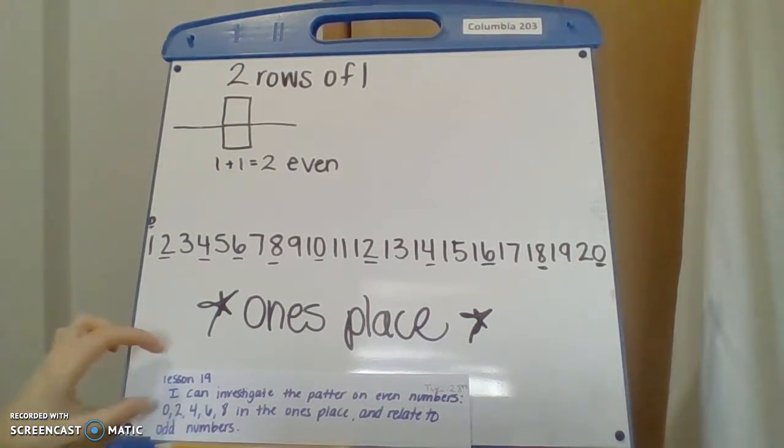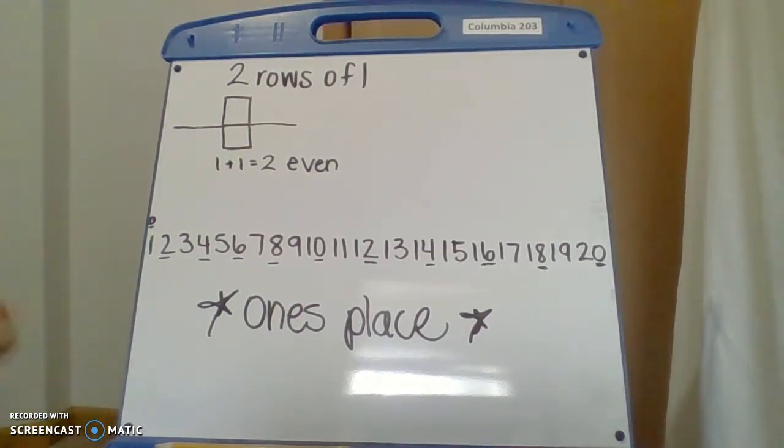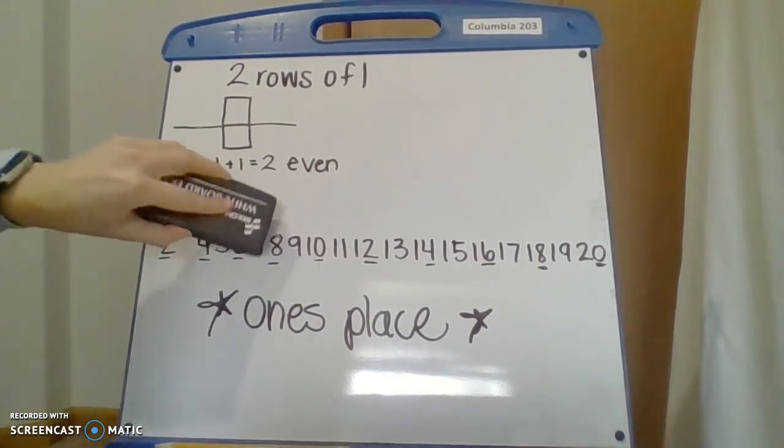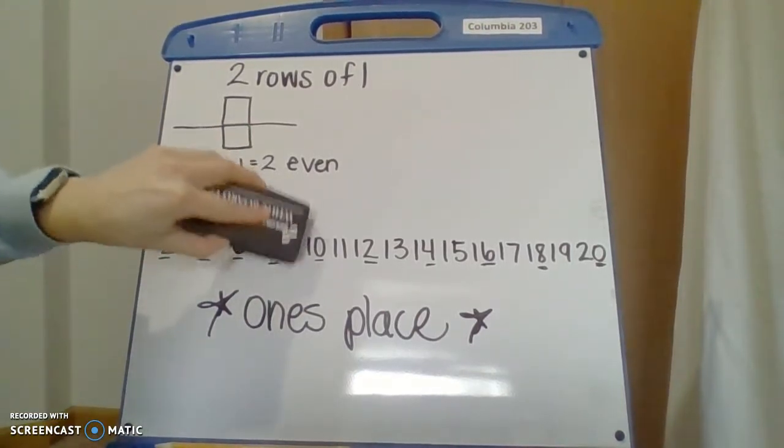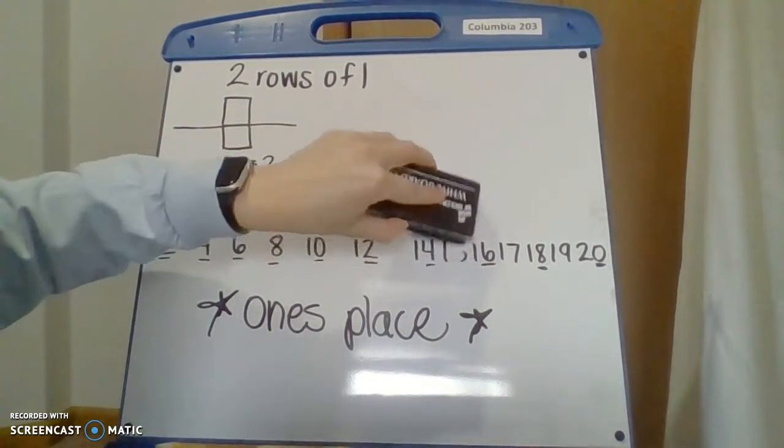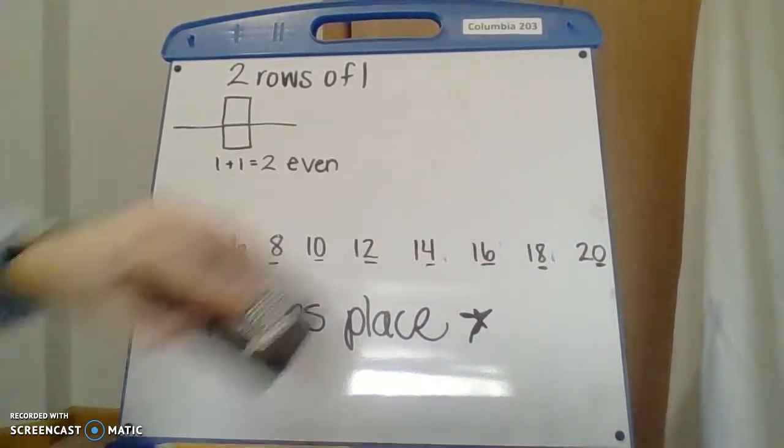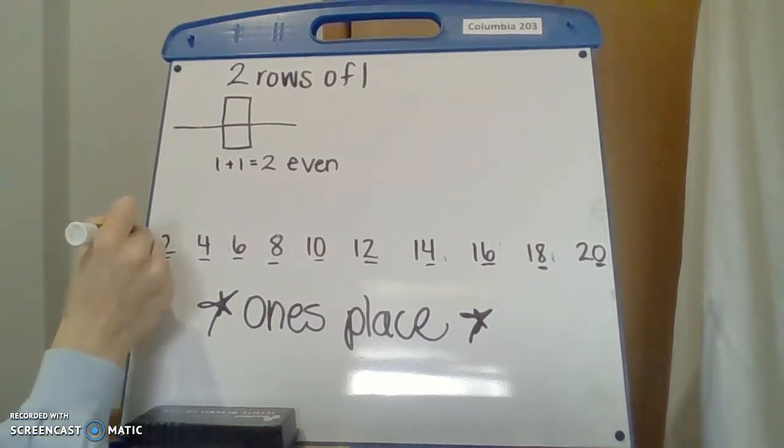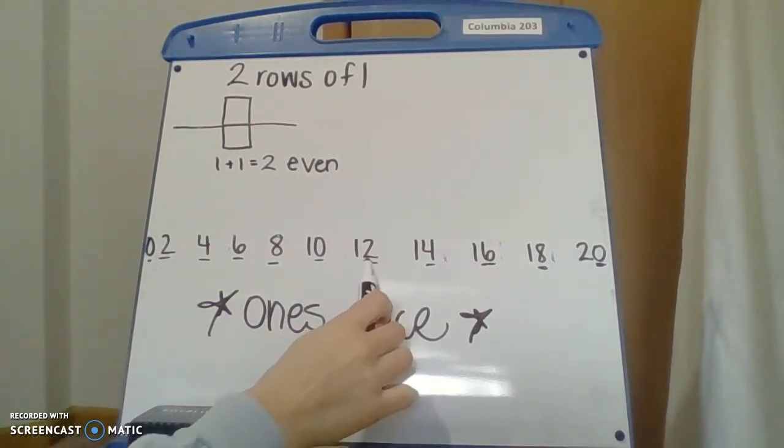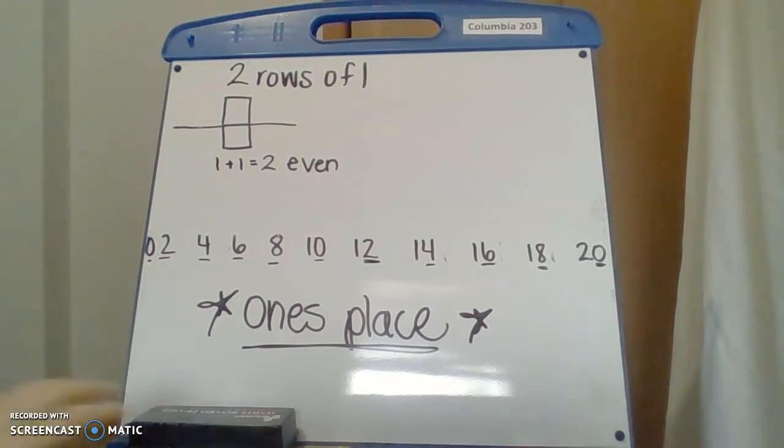So remember your even numbers are your numbers that can be split up evenly into two equal groups. So we have two, zero, two, four, six, eight, 10, 12, 14, 16, 18, 20. Do you see? This is a two. It's in the one's place. Oh, this is also a two. It's in the one's place. That's something very important. You need to pay attention to always look at your one's place.